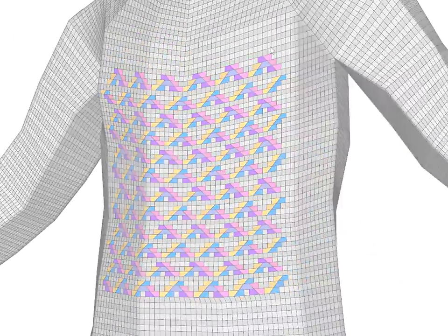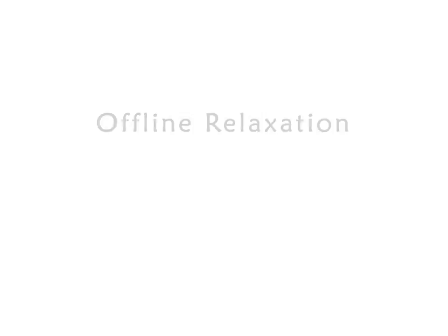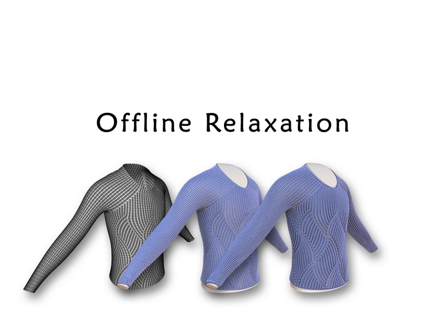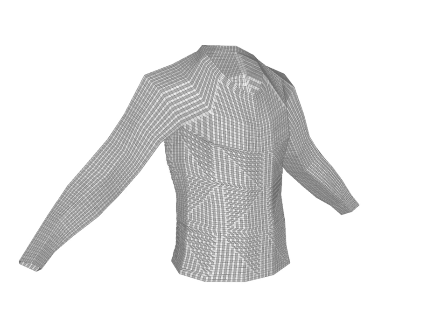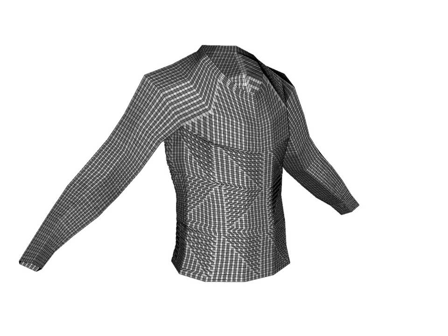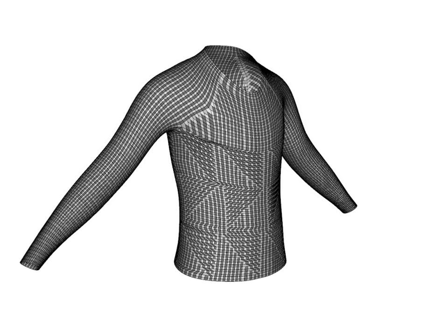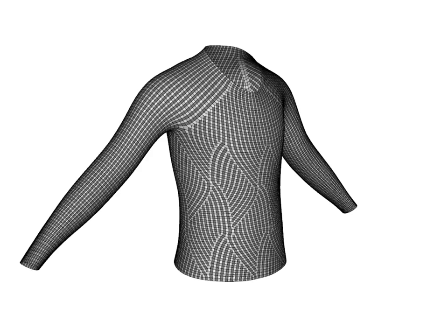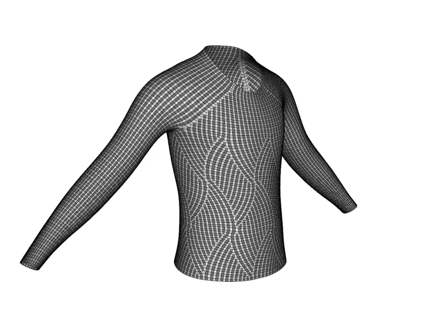After the stitch mesh is modeled, we perform offline relaxation to produce a realistic garment model from the stitch mesh description. Our offline relaxation procedure begins with mesh-based relaxation. Mesh-based relaxation first moves the vertices of the stitch mesh onto the subdivision surface defined by the input model, and then slides the vertices on this surface to provide a more uniform stitch distribution.